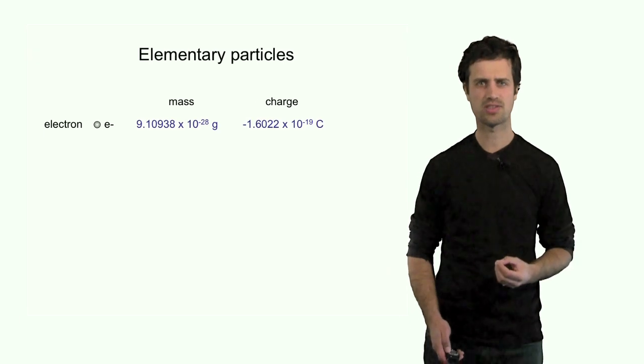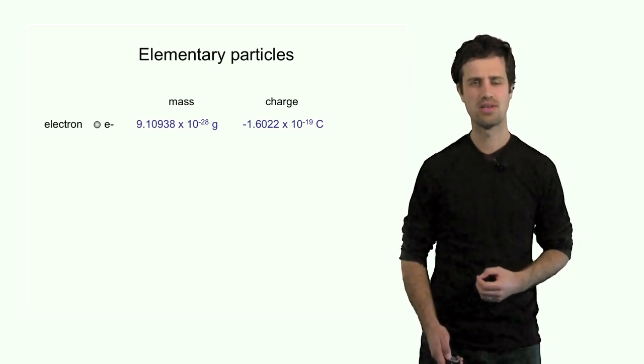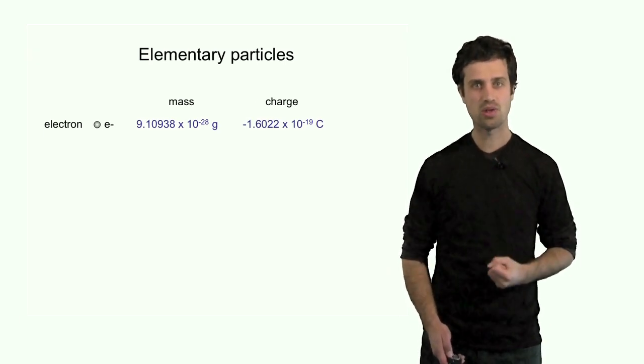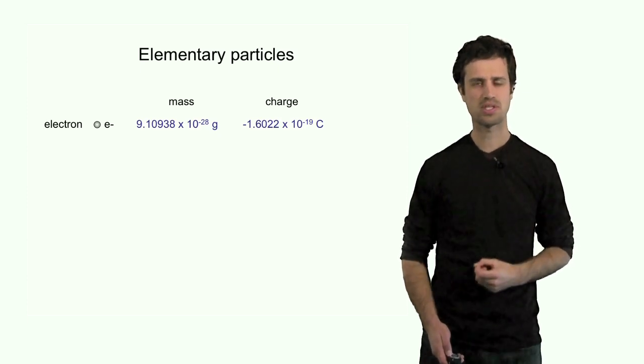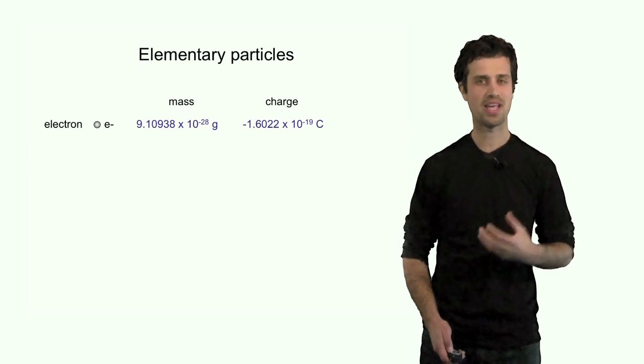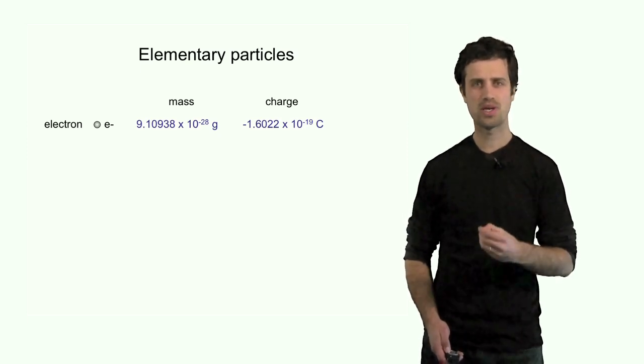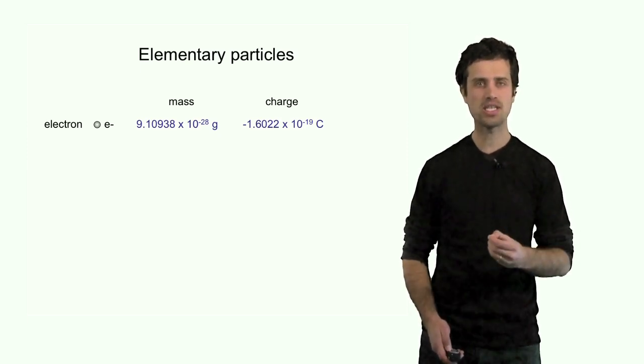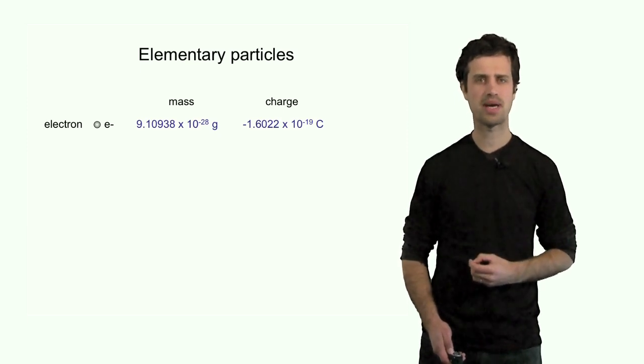The first particle is the electron, a very small particle. Its mass is only 9.1 × 10⁻²⁸ grams, and that's a very small mass by any standard. It also has a charge. Its charge is –1.6 × 10⁻¹⁹ Coulomb.